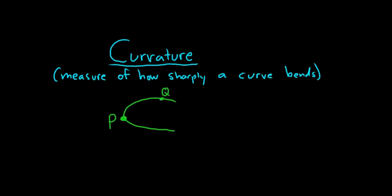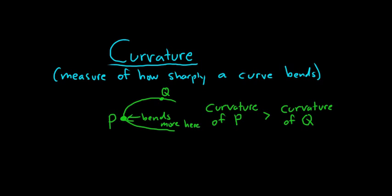Then we would say that the curvature of P is greater than the curvature of Q. So the curve clearly bends more at P than at Q. It's a sharper turn.